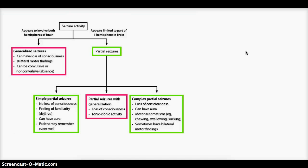Partial can be further divided into three groups: simple partial, partial seizures with generalization, and complex partial seizures. It's very easy to identify simple partial seizures. Why? Because the patient will not lose consciousness, whereas in the other seizures, there will be loss of consciousness.